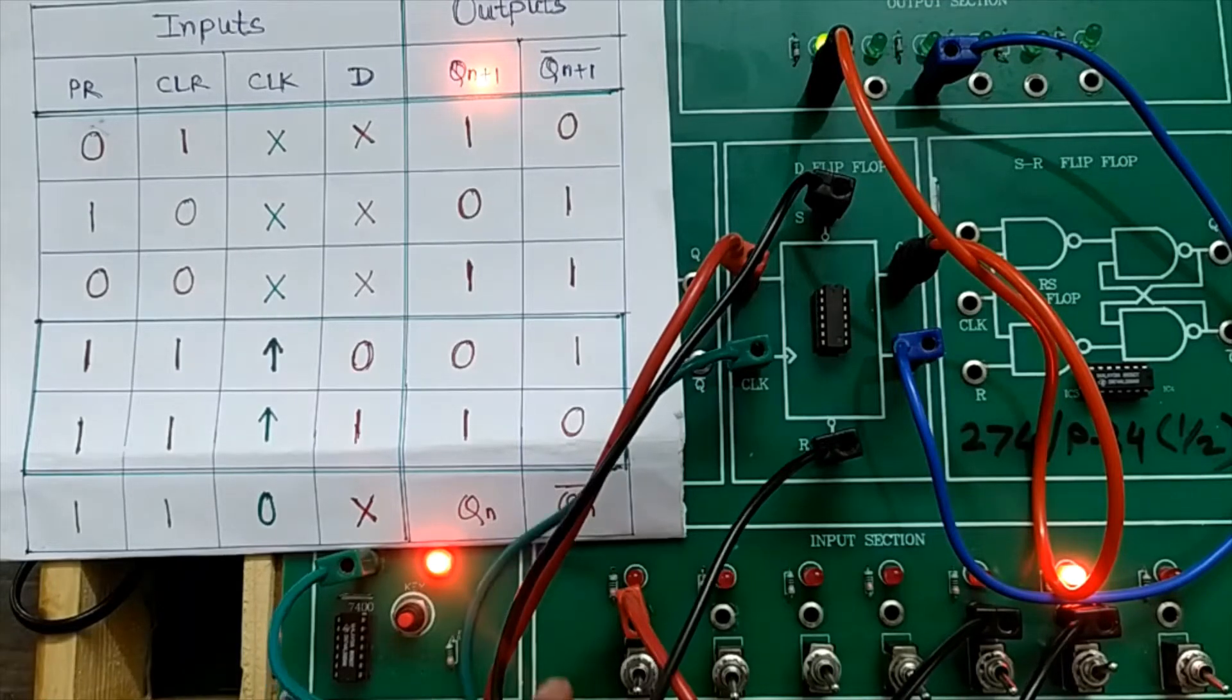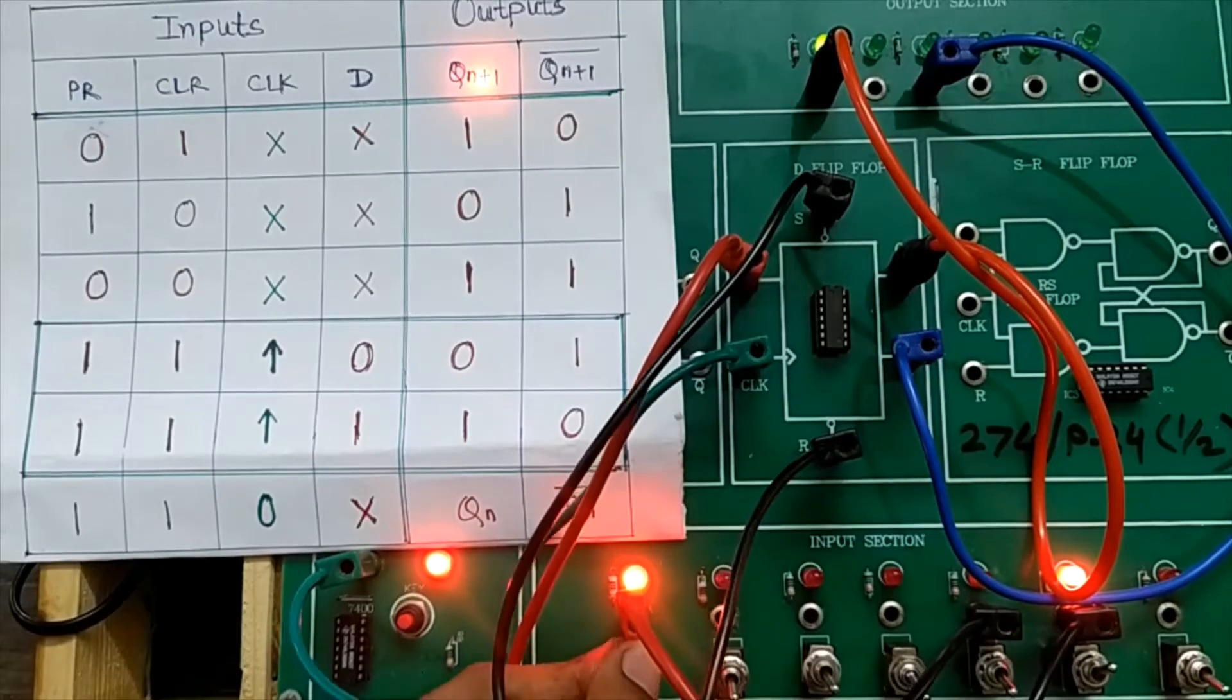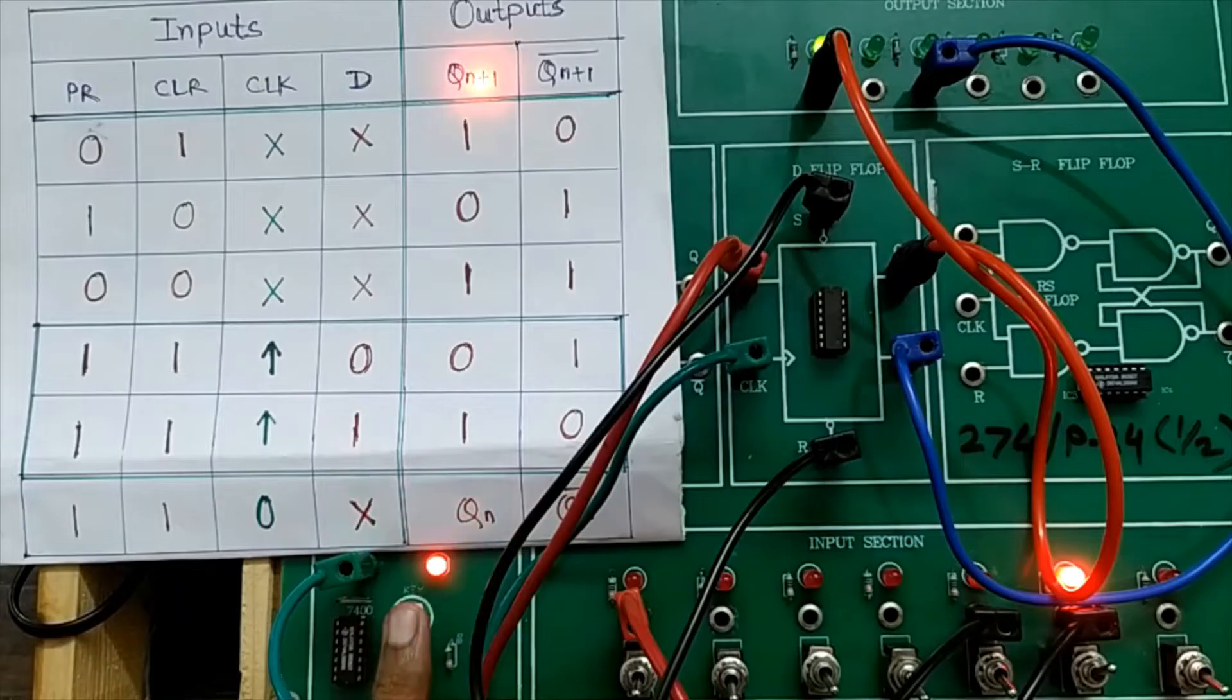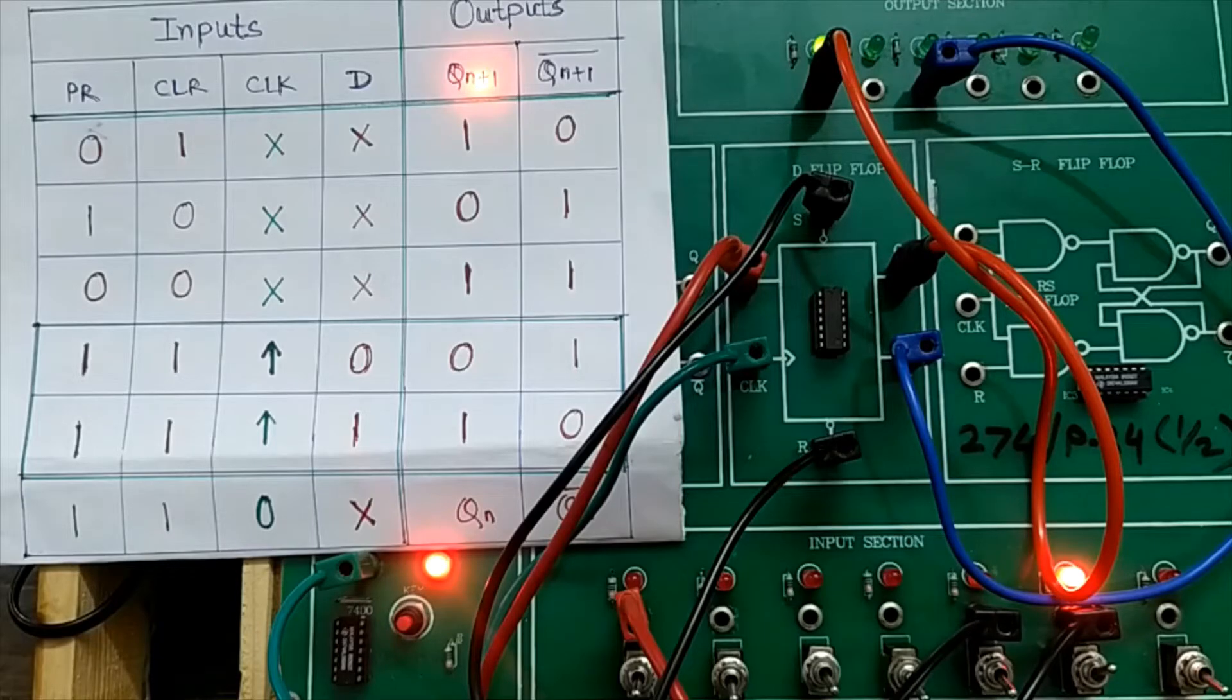Now whatever input I apply through this input pin or whatever status I give to the clock input, this status is not going to change because preset and clear pins have higher priority. Clock and input have no effect on the output when preset or clear pins are active. That's why this clock signal is shown as don't care and D is shown as don't care.